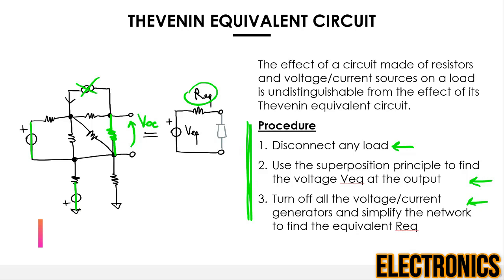You could argue this is quite some work, and you'd be right if you only need to find the voltage across a fixed load once. But the Thevenin equivalent is invaluable when the circuit drives different loads — once the model is known, finding voltage and current for a new load is much easier than redoing all calculations. It also allows you to compare how different circuits look from their ports, which is very hard to do with complicated, significantly different circuits.